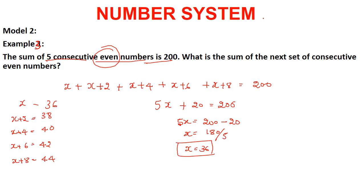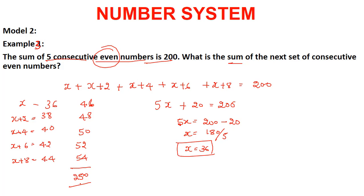The next set of 5 consecutive even numbers would be 46, 48, 50, 52, and 54. The sum is: 54 + 46 = 100, 52 + 48 = 100, and 100 + 100 + 50 = 250. So the answer is 250.